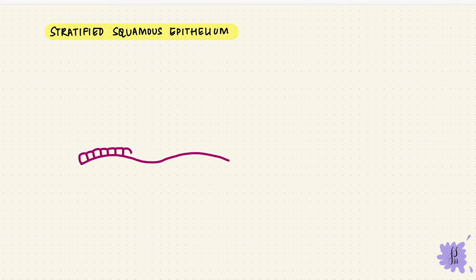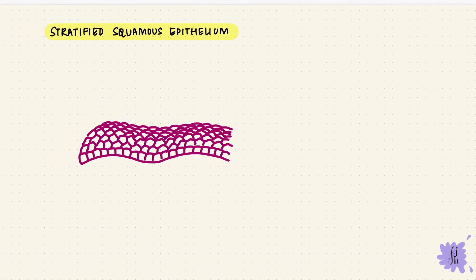The thing about stratified epithelium is that as you move towards the surface, the cells get flatter. So the basal cells are more cuboidal, then they become polygonal and the topmost cells, they are flat.